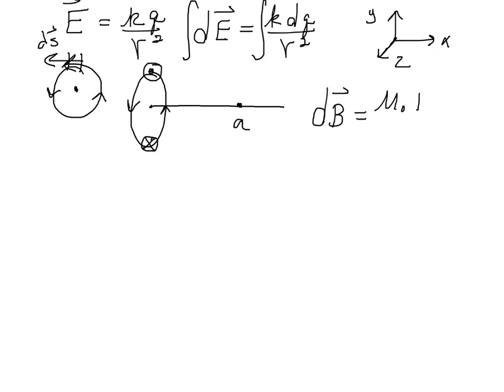mu-naught, the current, the cross product of the ds vector with a unit vector r hat, which is a unit vector, directional vector, that points from the ds toward the point considered.